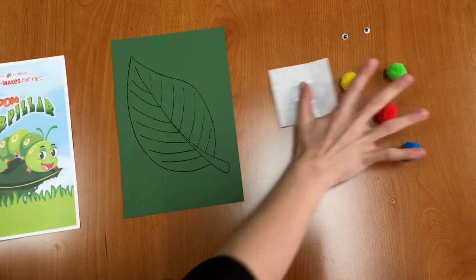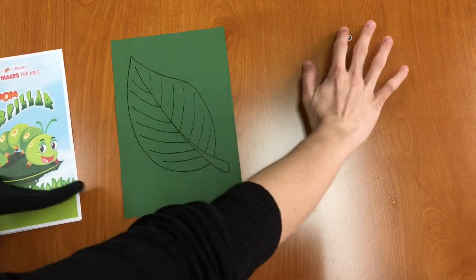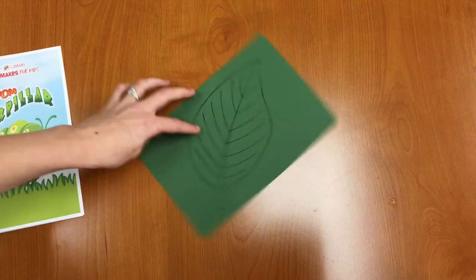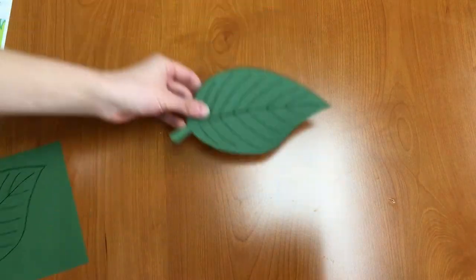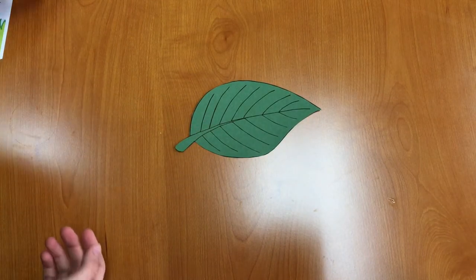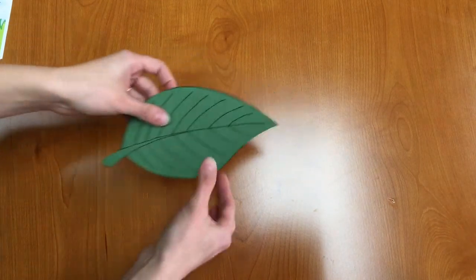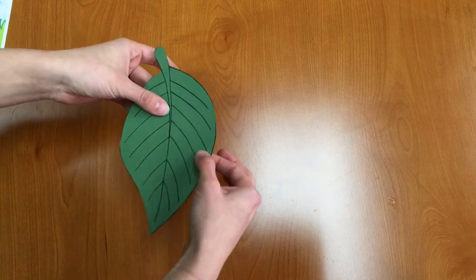Our first step is we're going to take away all of these little goodies and we're going to cut out our leaf. So I have a leaf already cut out and our next step is going to be if you have a hole punch you can punch little holes in your leaf in order to make it look like your caterpillar has been eating it. I don't have a hole punch so I'm just going to cut